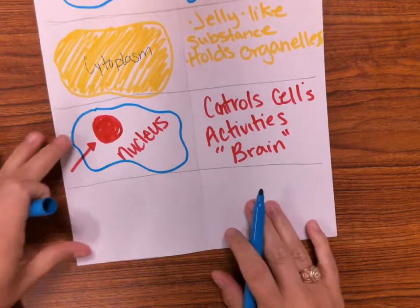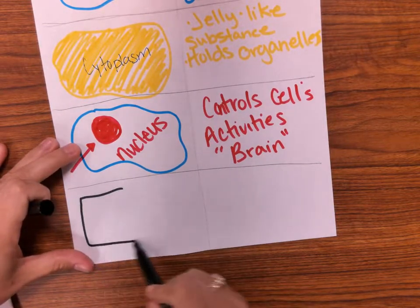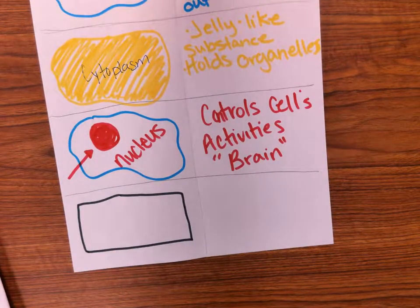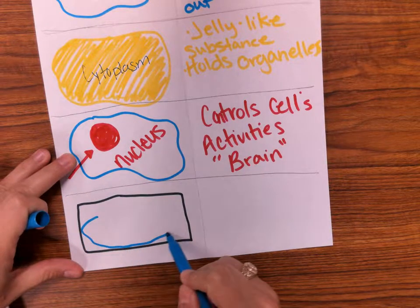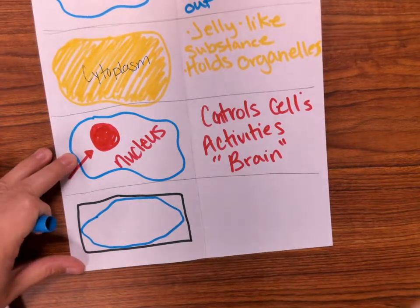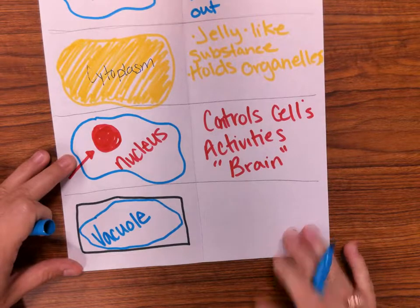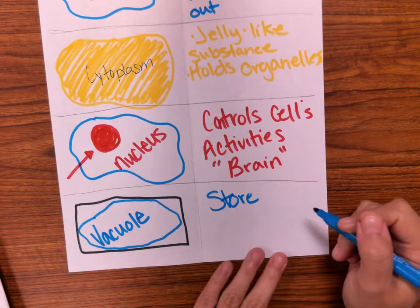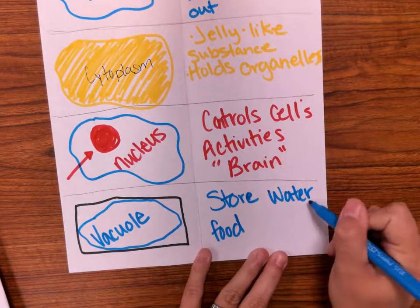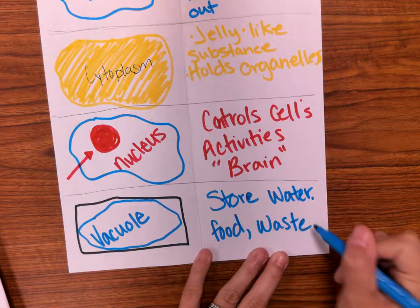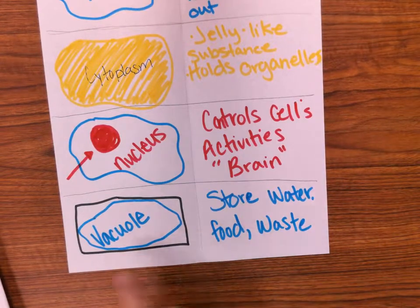The next structure is the vacuole, which is found in both plants and animals but looks different depending on the cell type. In plant cells, a vacuole takes up most of the space — they're big in plants but small in animal cells. Vacuoles are large storage containers, like balloons filled with water — they store water and food, and in animal cells they can also store waste. In plants, the large vacuole helps the plant stand tall by pushing out against the cell wall.